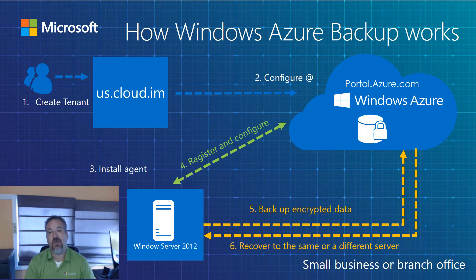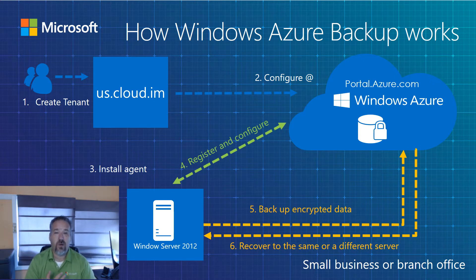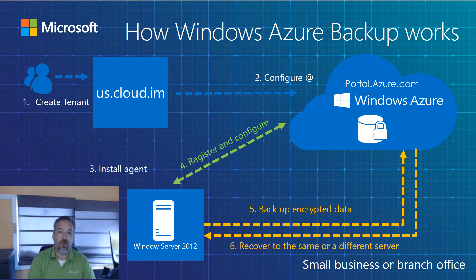If you have databases — SQL, SharePoint, Exchange, or Active Directory — you wouldn't follow that same process. Instead, you would go through portal.azure.com and specify that you have databases to back up. You will need to supply your own Windows Server, a server license, and storage, then download and install Azure Backup Server on that infrastructure. You get approximately a five-day local retention for those databases, and then Microsoft Azure Backup Server will offload them to the cloud as well.